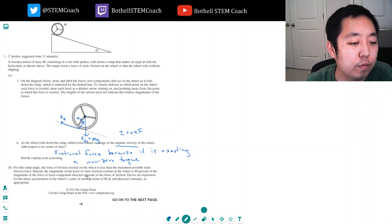For this ramp angle, the force of friction exerted on the wheel is less than the maximum possible static friction force. Instead, the magnitude of the force of static friction exerted on the wheel is 40% of the magnitude of the force component directed opposite to the force of friction. Derive an expression for the approximate linear acceleration of the wheel's center of mass in terms of m theta and physical constants.